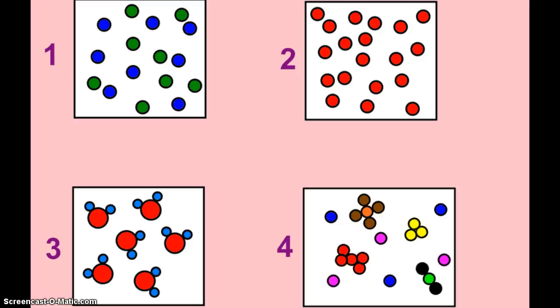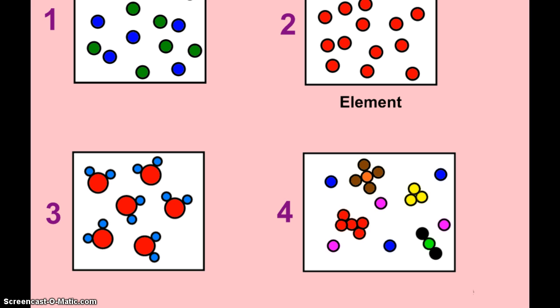Alright, so hopefully you found, again, the picture that has just one type of atom, that's our element. So, the second picture is an element. Our compound are our little Mickey Mouse people again. Not people, sorry. Little Mickey Mouse pictures.